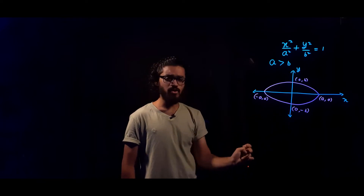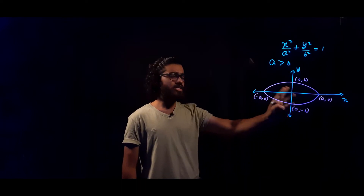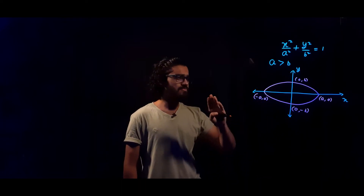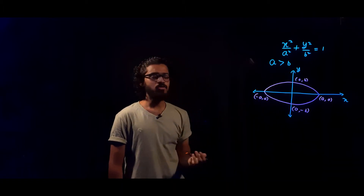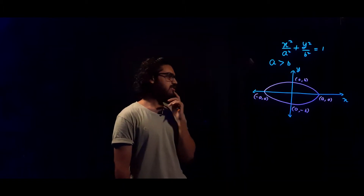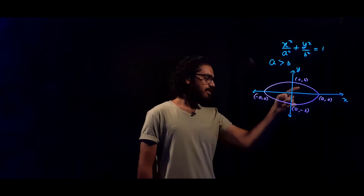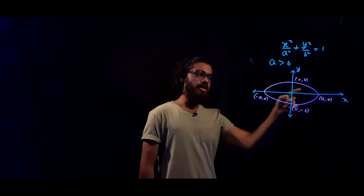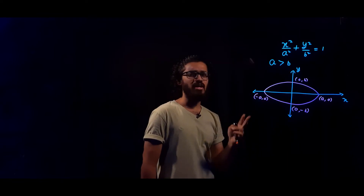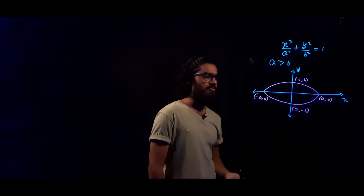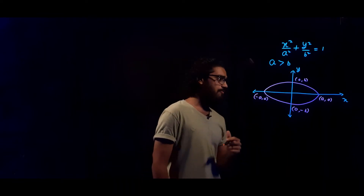As you can see, this is the first, second, third, and fourth quadrant. All areas are equal because the ellipse is symmetric across both axes. So I'll evaluate the area enclosed in the first quadrant and simply multiply it by four.